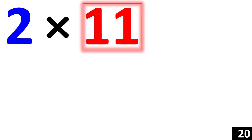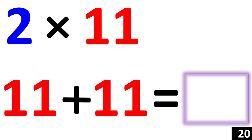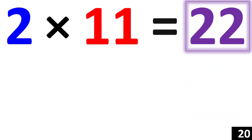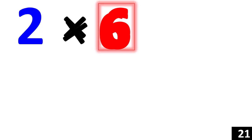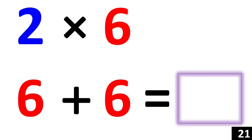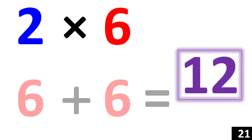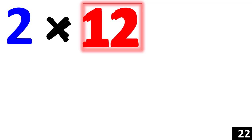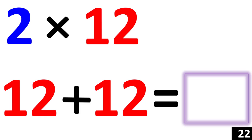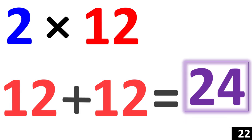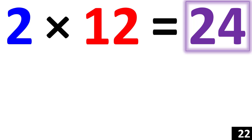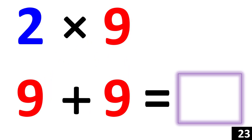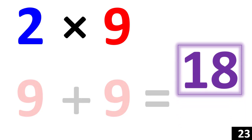2 times 11 is the same thing as 11 plus 11. 22. So 2 times 11 equals 22. 2 times 6 is the same thing as 6 plus 6. 6 plus 6 is equal to 12. So 2 times 6 equals 12. 2 times 12 is the same thing as 12 plus 12. 24. So 2 times 12 equals 24. 2 times 9 is the same thing as 9 plus 9. 18. So 2 times 9 equals 18.